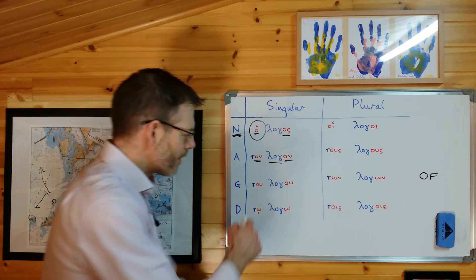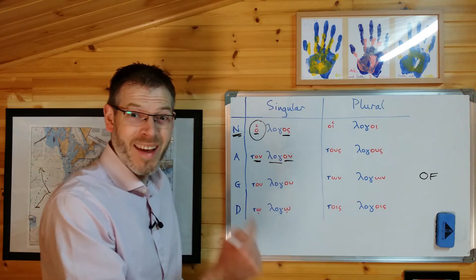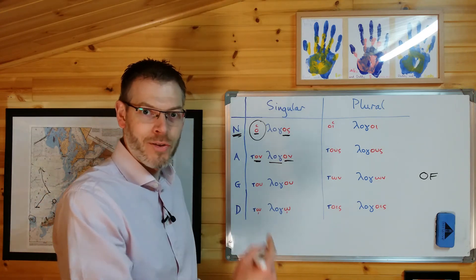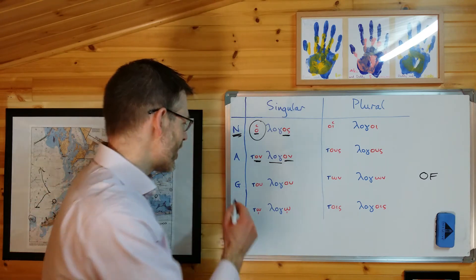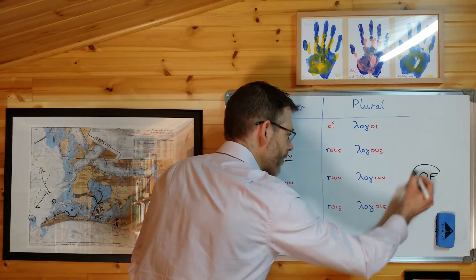It's possible that you could have a word like truth in the singular, and it wouldn't be of a truth, it would just be of truth, but context will sort that out for you. The key thing is, when you see a genitive, you think of.